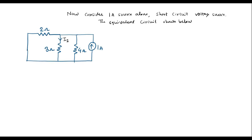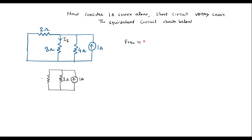As we are calculating the current through the 3-ohm resistor, let us keep the 3-ohm resistor as it is. In that case, the 2-ohm and 4-ohm are in parallel. We will replace these two resistors by a single equivalent resistor. The 1-amp source is present and the 3-ohm resistor remains. R equivalent is equal to 2 in parallel with 4, that is 2×4 divided by 2+4, which is 8/6, that is 4/3 ohm.